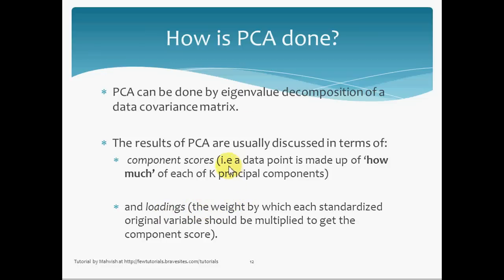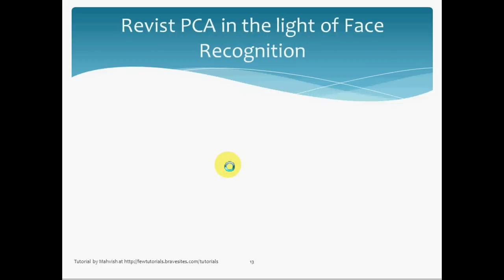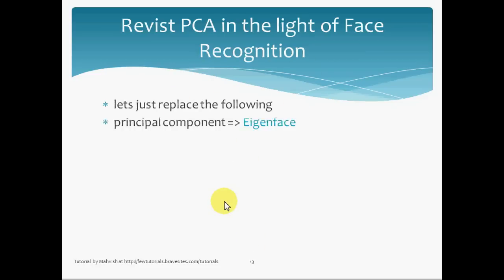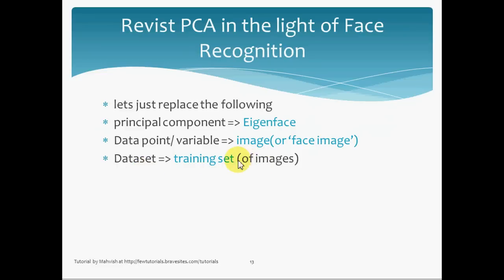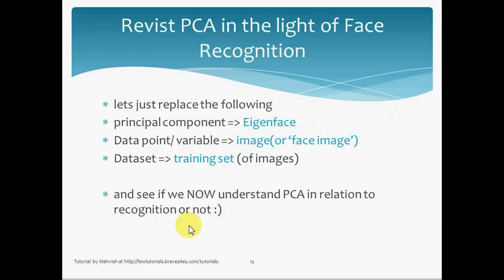That is all for understanding PCA before we look at how it works. I'll revisit all that we have read in the form of bullets, replacing the term 'principal component' with 'eigenface', 'data point' or 'variable' with 'image', and 'data set' with 'training set of images', for the sake of understanding its relation to face recognition. Let's see if we understand PCA in relation to recognition.